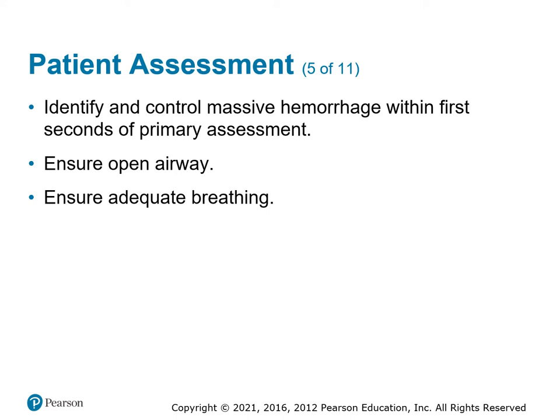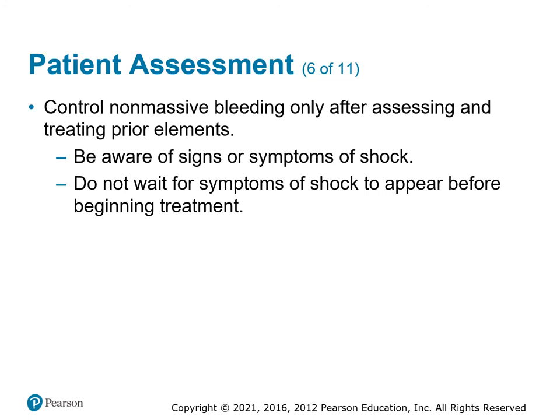Identify and control massive bleeding within the first few seconds of primary assessment. While we say airway, breathing, circulation — if you see massive hemorrhage, stop it right away, because getting oxygen to lung tissue doesn't help if there's no blood. With multiple responders, one person can stop the bleeding while another manages airway and breathing. For non-massive bleeding, complete your assessment first, then fix it. If you're unsure, stop it now. If you think the patient may be in shock, start treatment without waiting for decompensation.